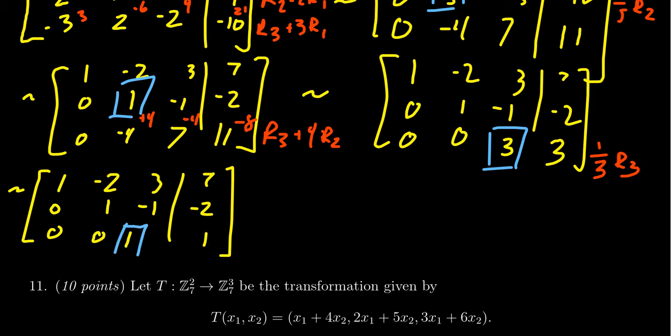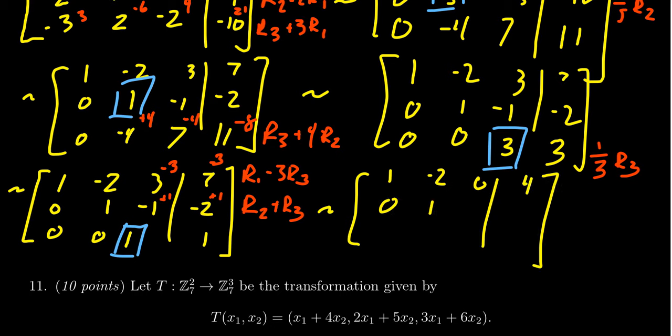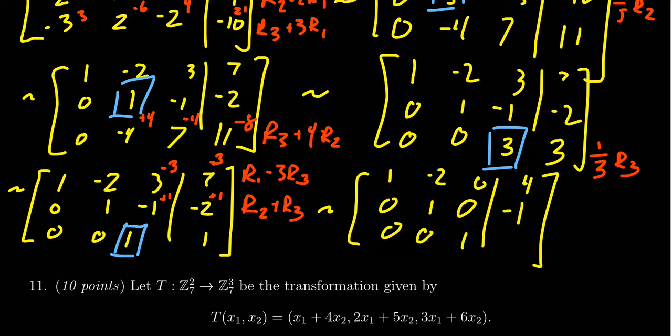So now we're in the backwards phase, right? We want to get zeros above the 1 right there. I'm going to take row 2 and add to it row 3. This will give me a plus 1 and a plus 1. We're going to then take row 1 and subtract from it 3 times row 3. So we get minus 3, minus 3. Perform the row operations. So you get 1, -2, 0, 4. And then we're going to get 0, 1, 0, -1. And then we get 0, 0, 1, 1.